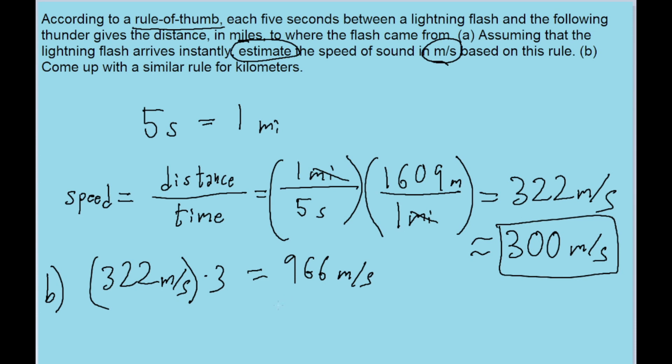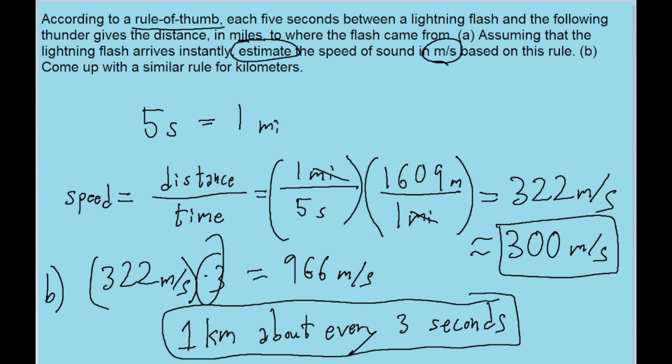So it takes 3 seconds for thunder to travel 1 kilometer. An equivalent rule would be that thunder travels 1 kilometer about every 3 seconds. Based on our rough estimates, this is a pretty decent equivalent rule for kilometers.